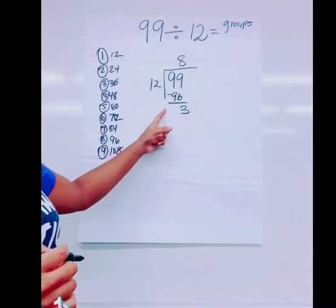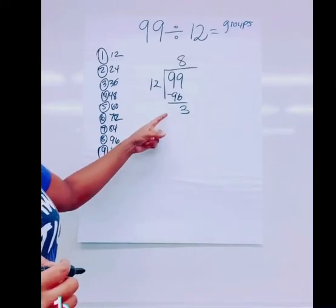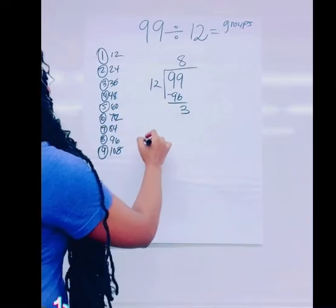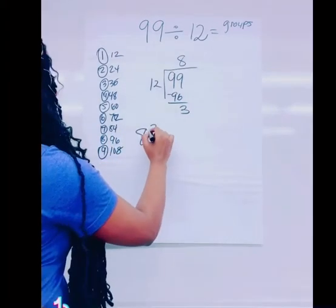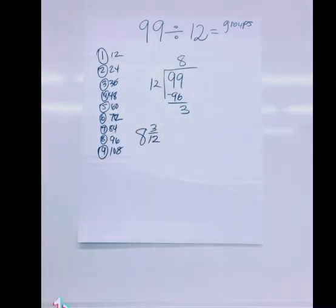Now, if this was elementary, that would be a remainder. But since this is not elementary, this is going to be 8 total groups with 3 out of 12 left over. That is how you turn that into a fraction.